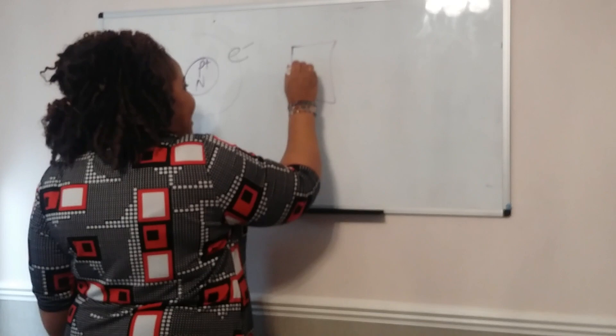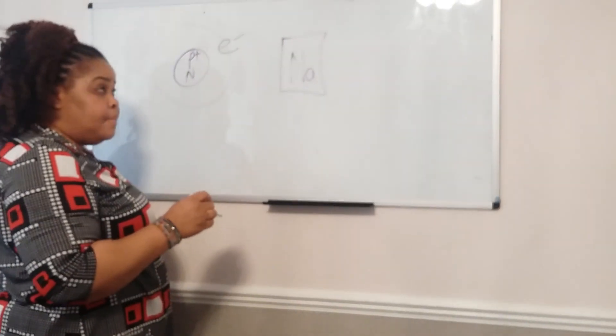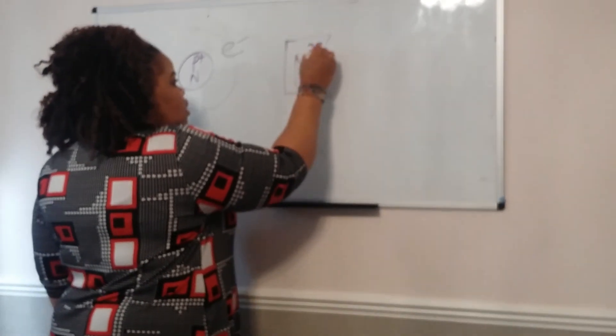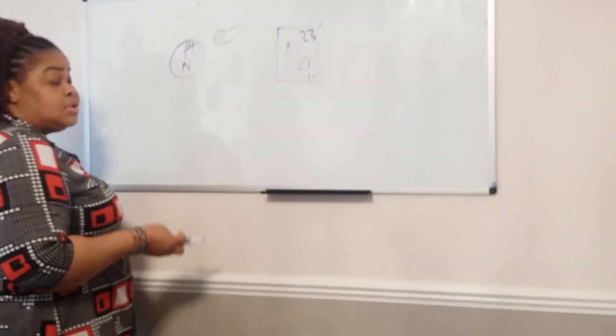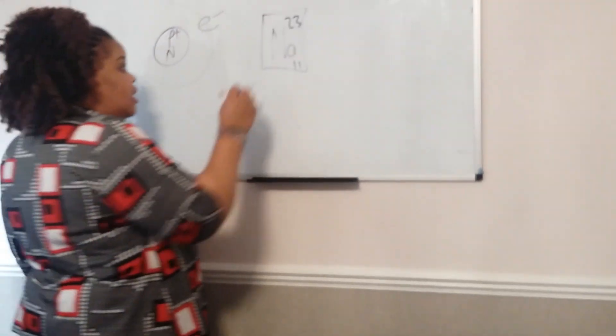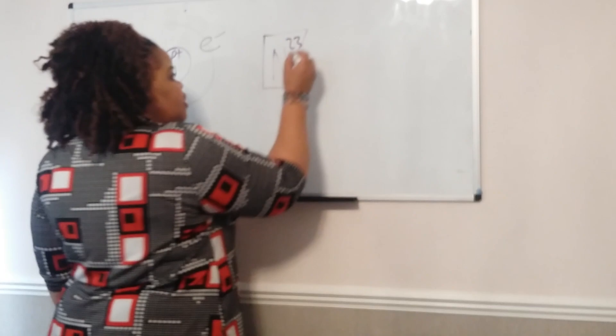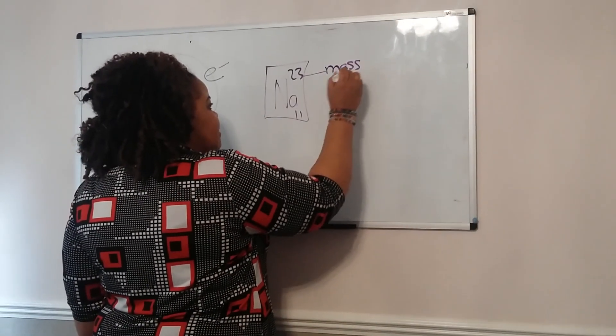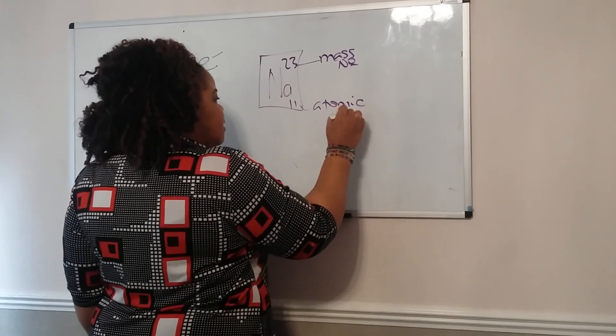So on the periodic table, every element has got its own space. You will be given a periodic table, but you need to know that there are two numbers - a large one and a little one. Now, when I read these numbers from the top of my head, it's just because I've done it for a long time. You don't need to memorize them. You just need to know how they work. So you have the mass number and the atomic number.